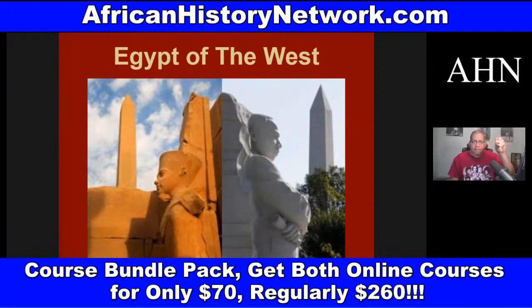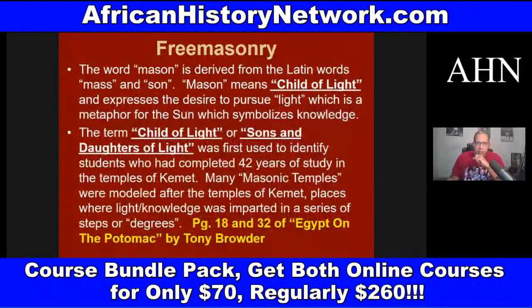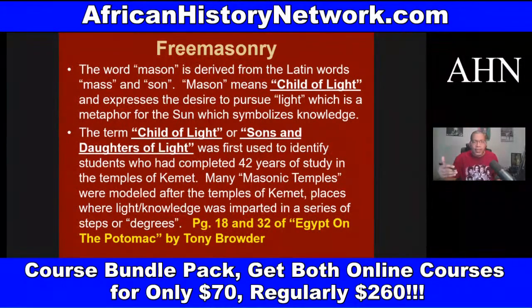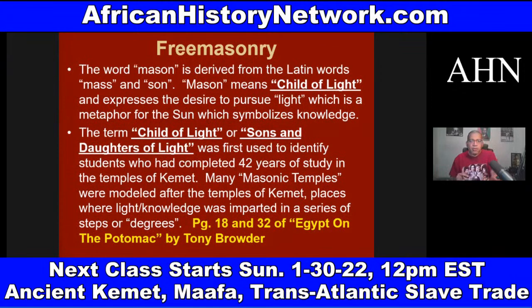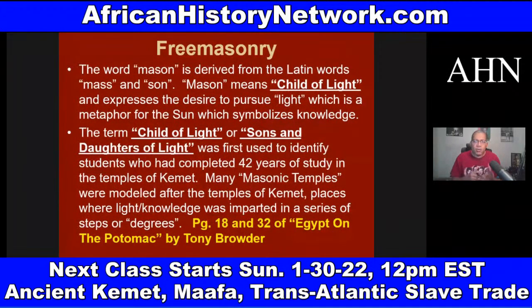The Washington Monument is a Tekhen because 50 of the 56 signers of the Declaration of Independence were Freemasons, and the foundation of Freemasonry comes from the teachings of ancient Kemet and the mystery systems. The word 'mason' is derived from Latin words meaning 'child of light,' expressing the desire to pursue light — a metaphor for the sun, which symbolizes knowledge. The term 'child of light' or 'sons and daughters of light' was first used to identify students who had completed 42 years of study in the temples of ancient Kemet.